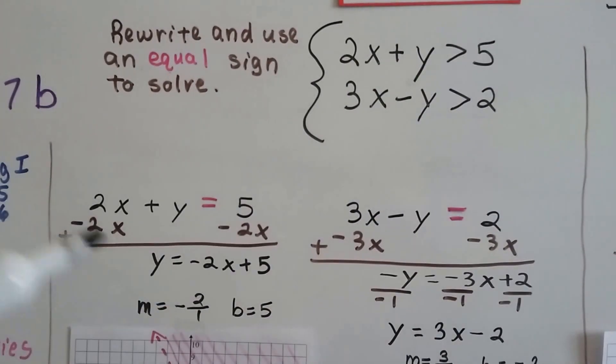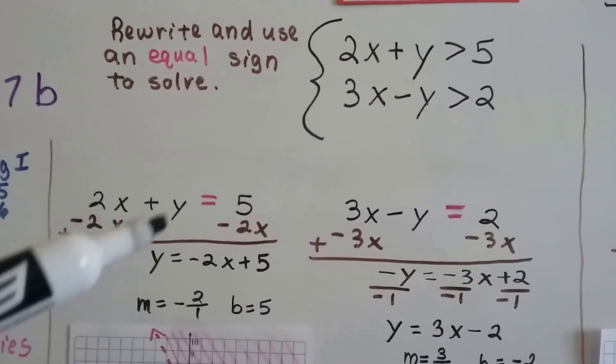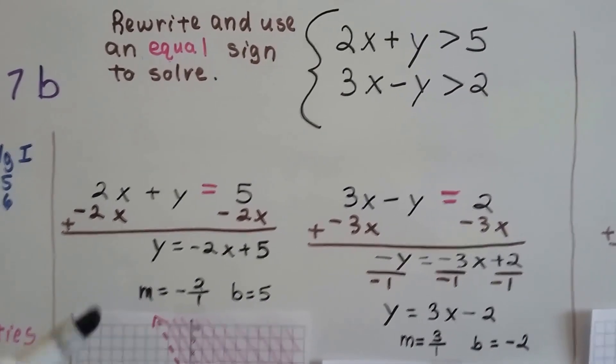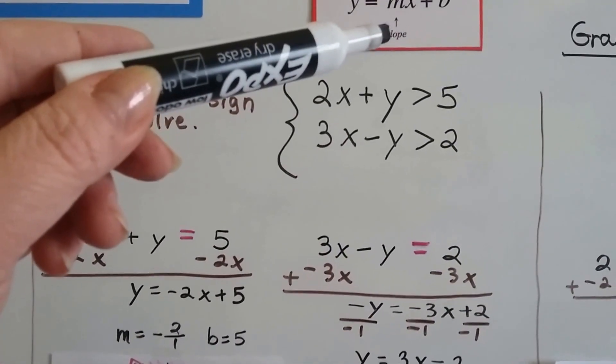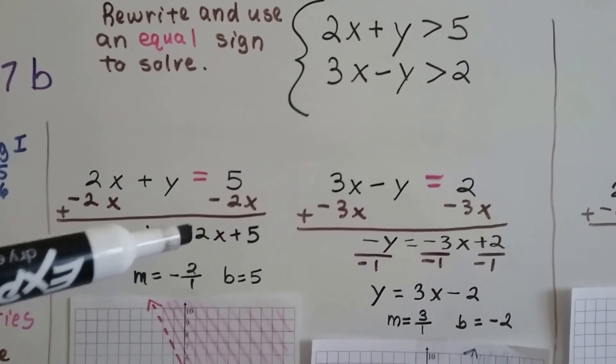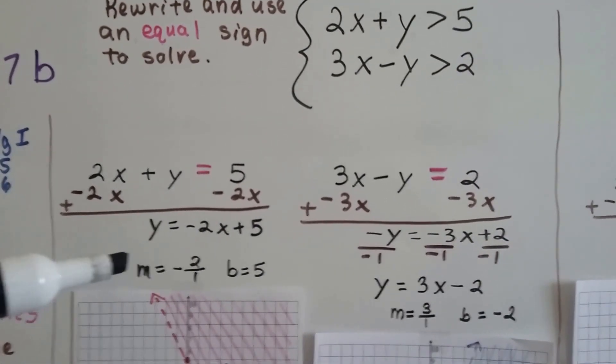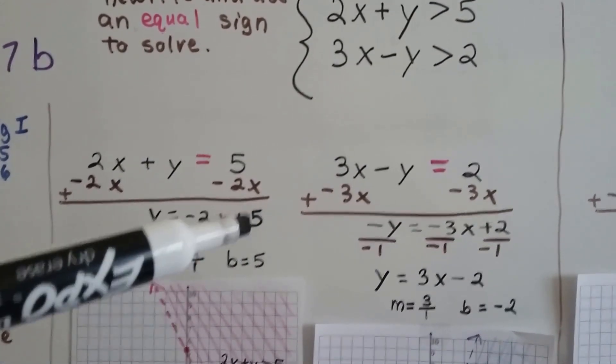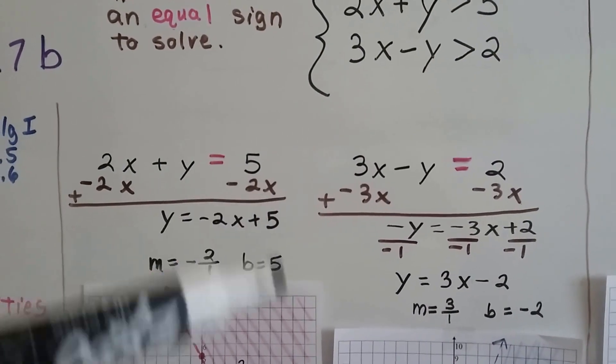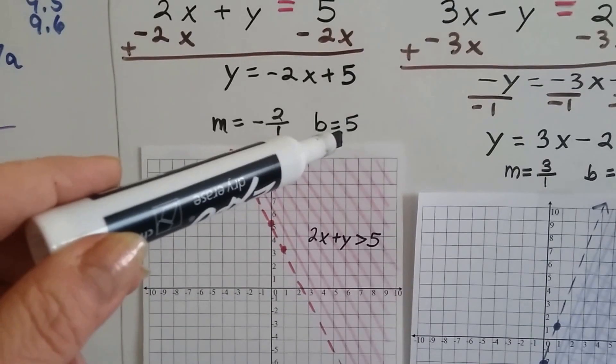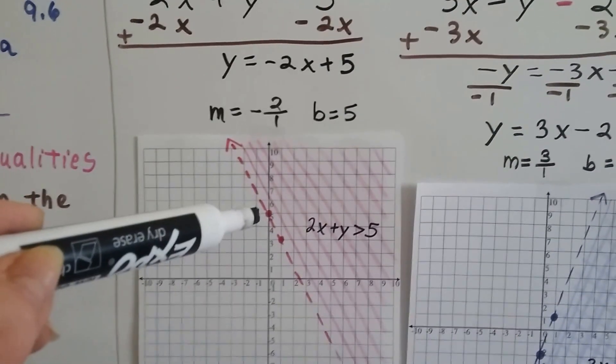We add a negative 2x to each side to eliminate it from over here and isolate the y. We get y equals negative 2x plus 5. We know that m is our slope and b is our y-intercept. So we know we have a negative 2 slope, which can be written as negative 2 over 1 for our rise over our run. And it's going to hit the y-axis at this y-intercept b at this 5.